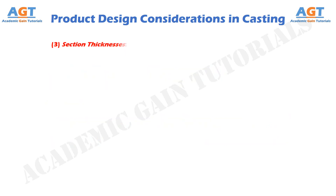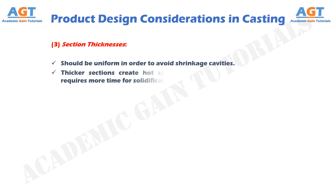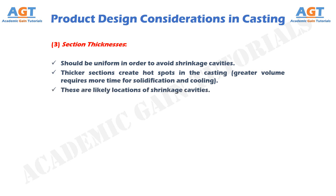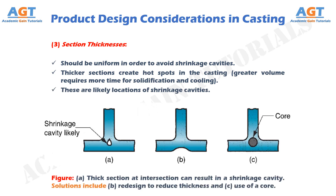Number 3: Section Thicknesses. These should be uniform in order to avoid shrinkage cavities. Thicker sections create hot spots in the casting; greater volume requires more time for solidification and cooling, making them likely locations of shrinkage cavities. In Figure A, we can see that a thick section at an intersection can result in a shrinkage cavity. Solutions include redesign to reduce thickness and use of a core.